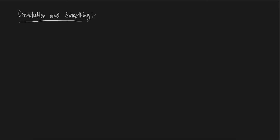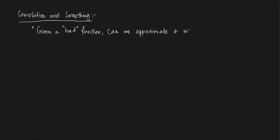What does it mean? Essentially, the point is this: given any function, I want to approximate the function smoothly. So given a bad function — let us just call it a bad function — can we approximate it with a smooth function?